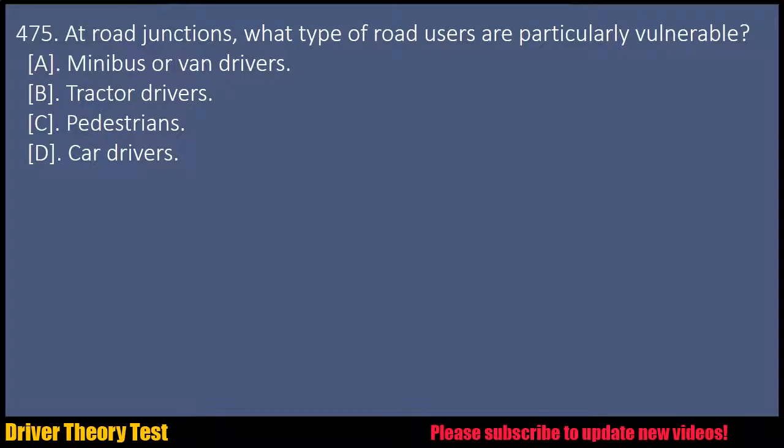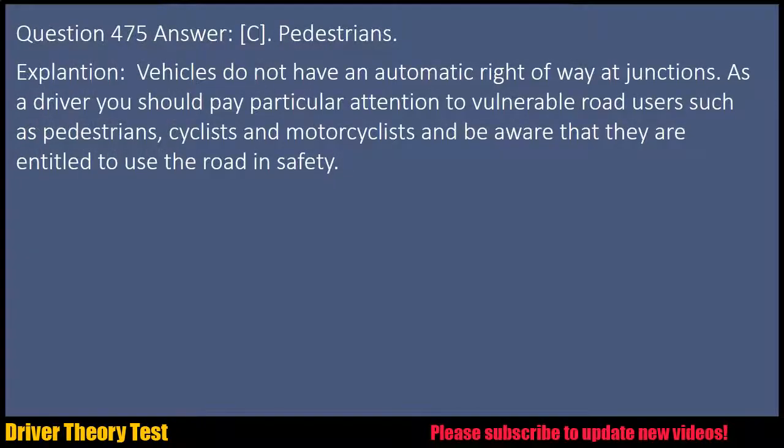Question 475: At road junctions, what type of road users are particularly vulnerable? A. Minibus or van drivers. B. Tractor drivers. C. Pedestrians. D. Car drivers. Answer: C. Pedestrians. Explanation: Vehicles do not have an automatic right-of-way at junctions. As a driver you should pay particular attention to vulnerable road users such as pedestrians, cyclists and motorcyclists, and be aware that they are entitled to use the road in safety.